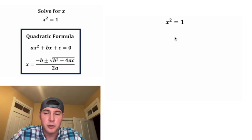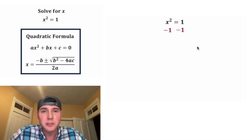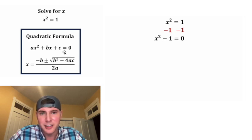So let's copy down this x squared equals 1. We need to set it equal to 0. So we're going to subtract 1 from both sides. That gives us x squared minus 1 equals 0. Now it looks like this.